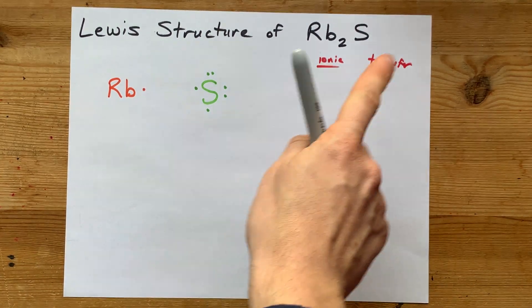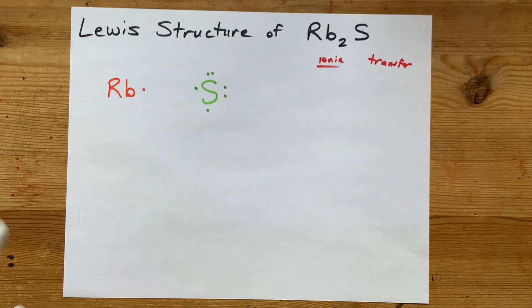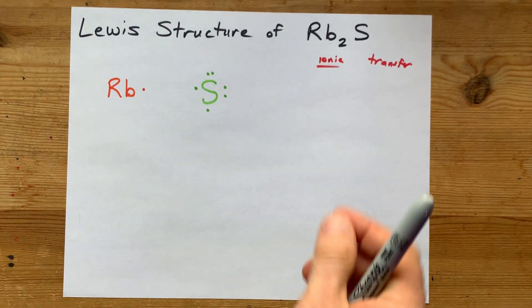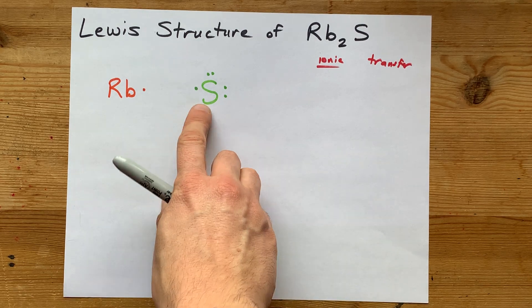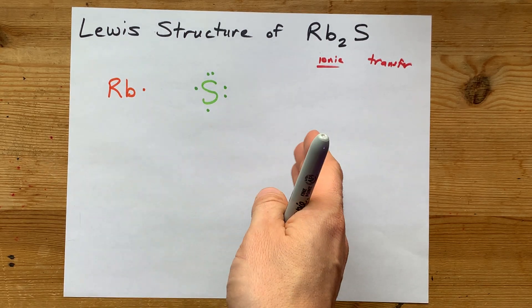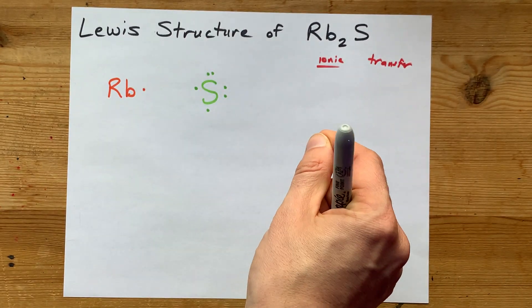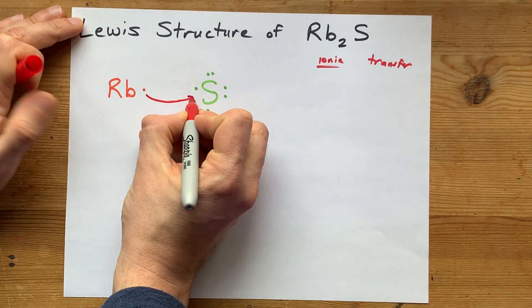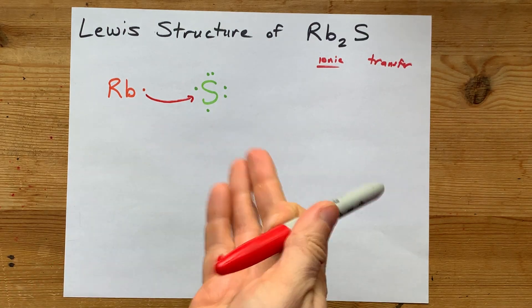Like I said, metals plus non-metals, the metal is going to give its electrons away to complete the octet on the non-metals. Sulfur has 6 electrons, wants 8. That's what the octet rule is. So this rubidium atom says, hey, you can take mine. Now you have 7.